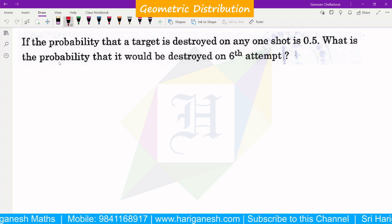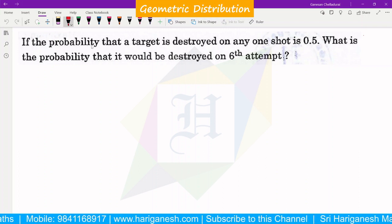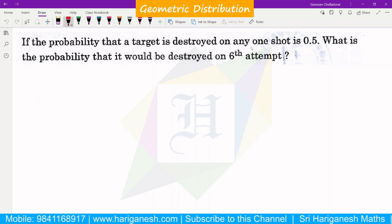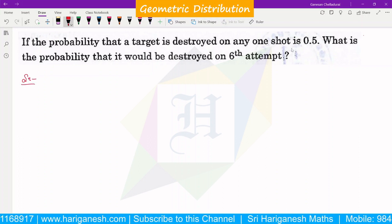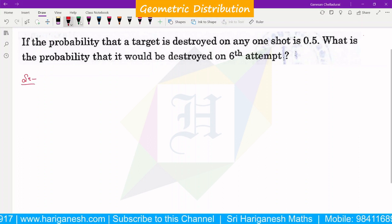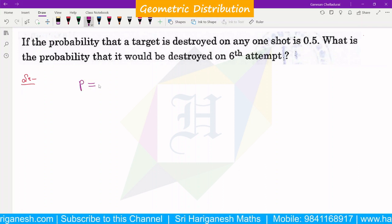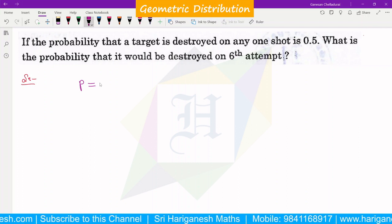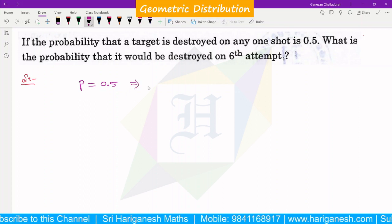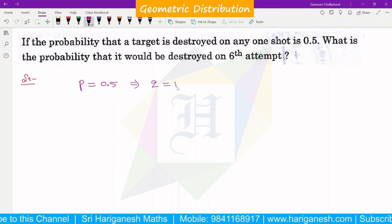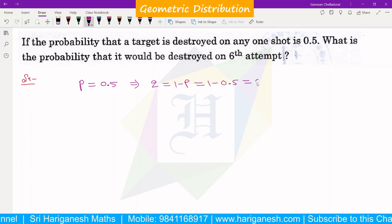Welcome students. This is on geometric distribution. The probability that a target is destroyed on any one shot is 0.5. So p is 0.5, and q is 1 minus p, so 1 minus 0.5 equals 0.5.